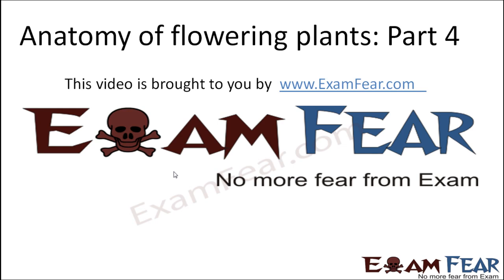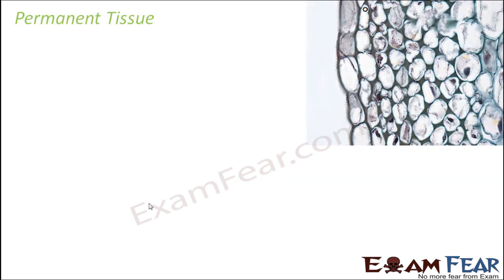Hello friends, this video on Anatomy of Flowering Plants part 4 is brought to you by examphere.com — No more fear from exam. So let us now talk about permanent tissue. These tissues do not have the capacity to divide, so they remain as they are, and that is why they are called permanent tissues.